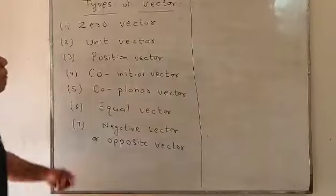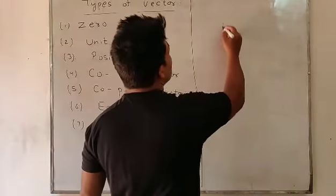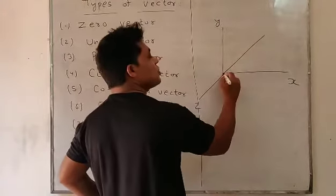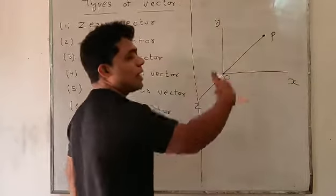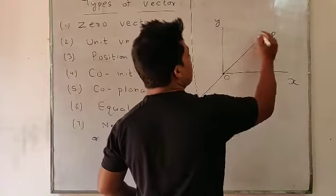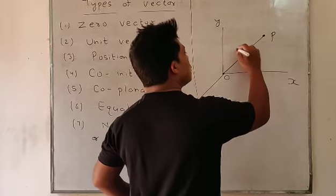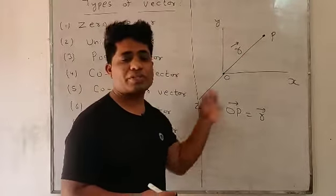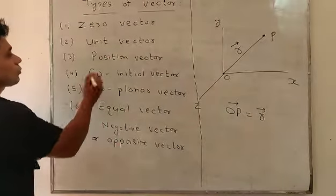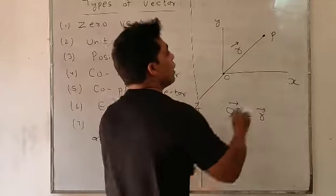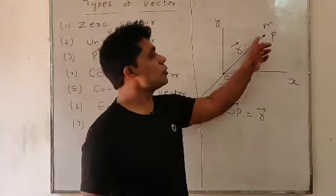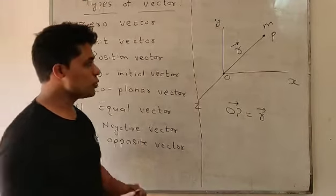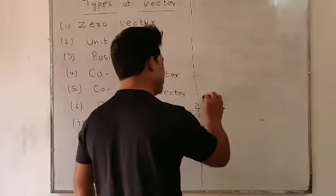Now let's move to the third type: position vector. Position vector refers to those vectors that indicate the position of a physical quantity. Suppose O is the origin point and P is a particular point in the x-y-z space — then the vector OP is said to be the position vector, represented by r. If a particle of mass m is placed at point P, then r is the position of that particle with respect to the origin O.